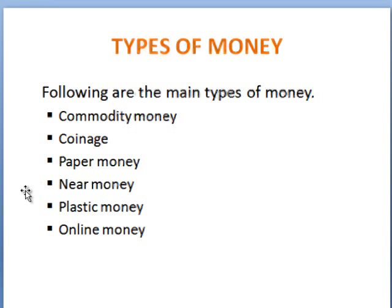Next is near money. Near money means things which can be used in place of paper money — checks are the best example. Although near money does not enjoy all the qualities of good money. Plastic money is another format, very popular nowadays, like credit cards and debit cards, which we can use in buying and selling goods. Online money is another format — PayPal is one example. You simply go to websites and pay through your credit cards or accounts to the merchant and receive your goods at your doorstep.